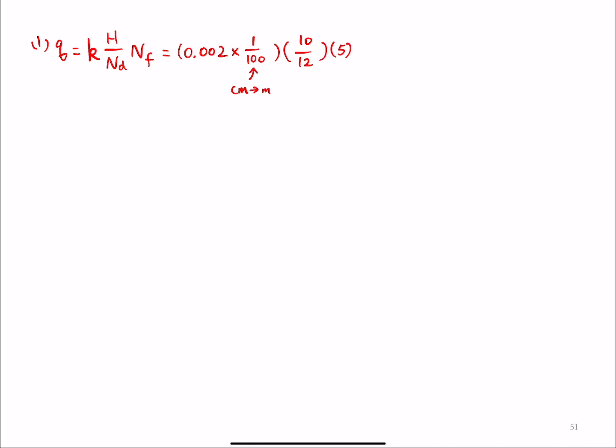So if you plug in numbers, you get 8.33 times 10 to negative 5 meter cube per second per unit length meter. And then you can convert this to meter cube per day per meter. So that's 7.2. So that's part 1, the seepage quantity per unit length.